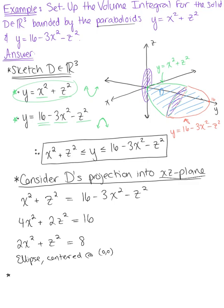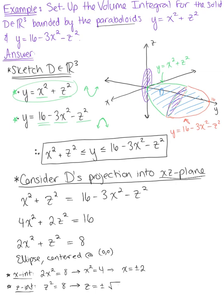Accuracy counts here as it helps with our bounds. Finding the intercepts of the ellipse: for the x-intercept, set z equal to 0, giving 2x squared equals 8, so x squared equals 4, meaning x-intercepts are at plus or minus 2. For the z-intercepts, set x equal to 0, giving z squared equals 8, so z equals plus or minus the square root of 8, which simplifies to plus or minus 2 times the square root of 2.